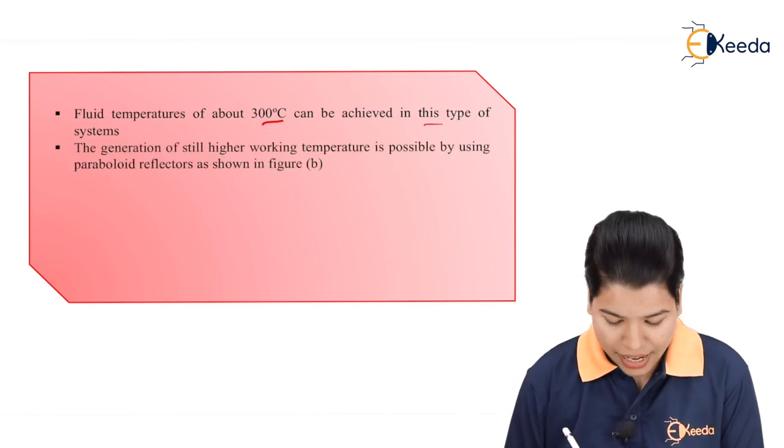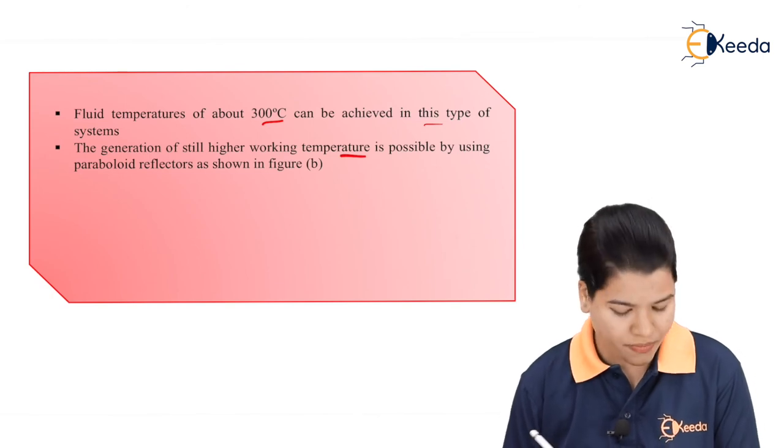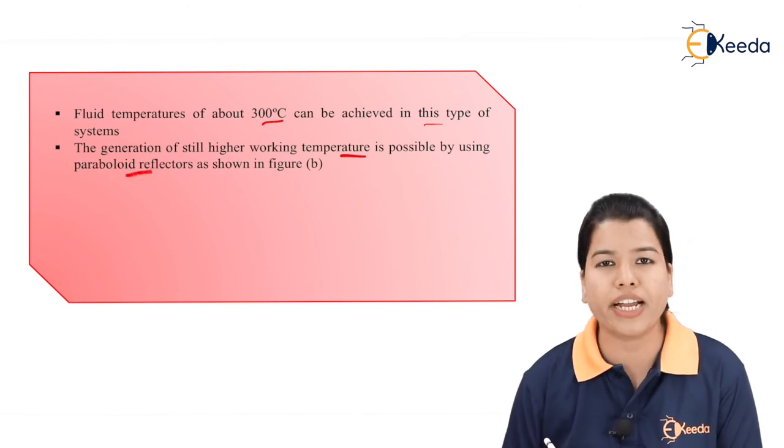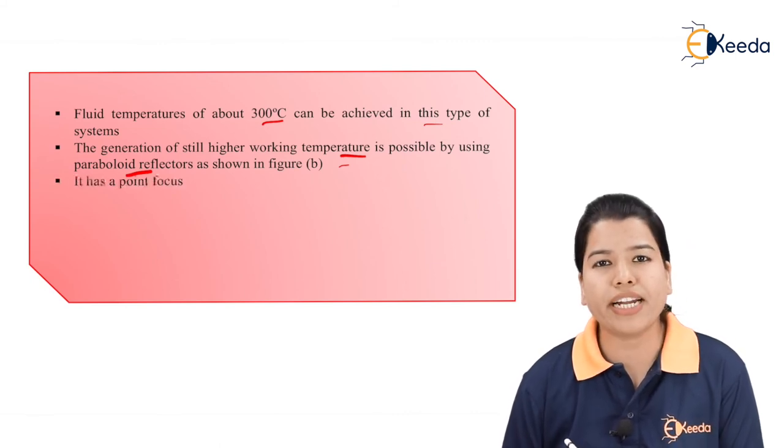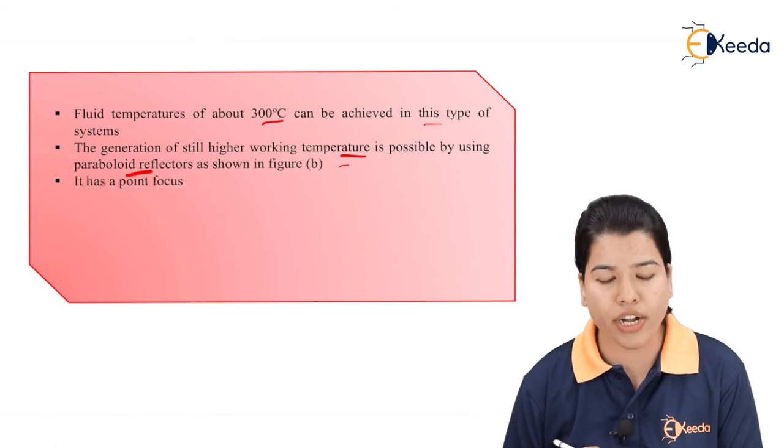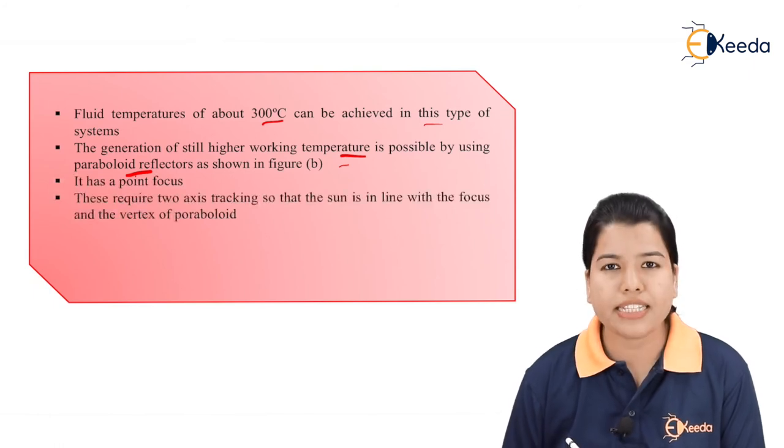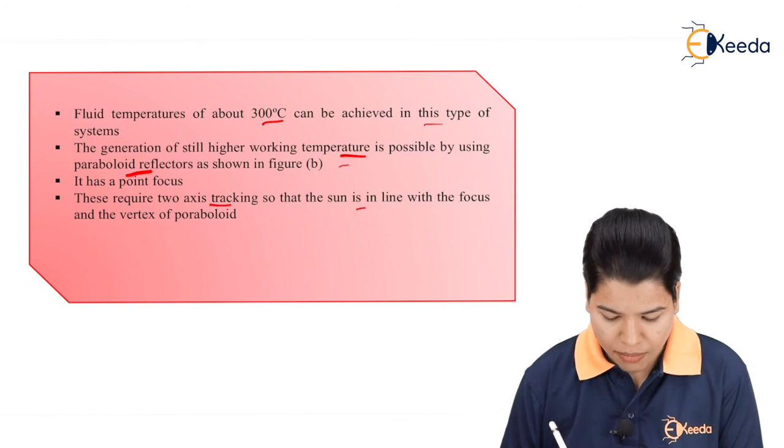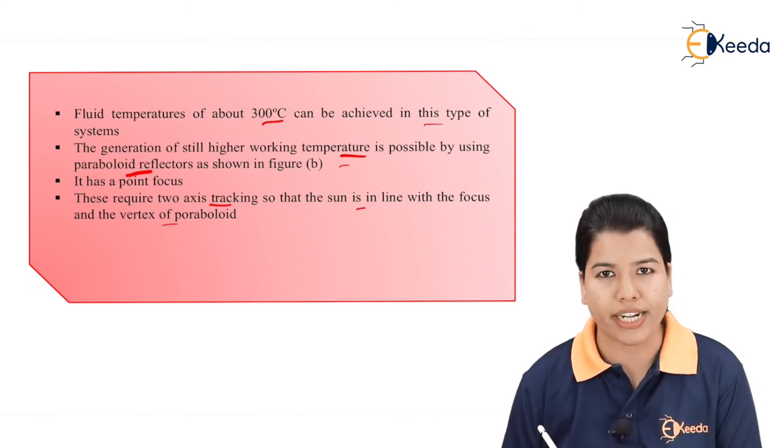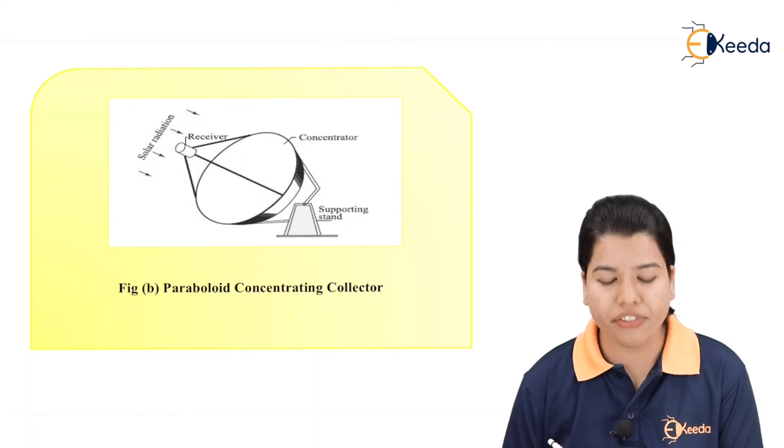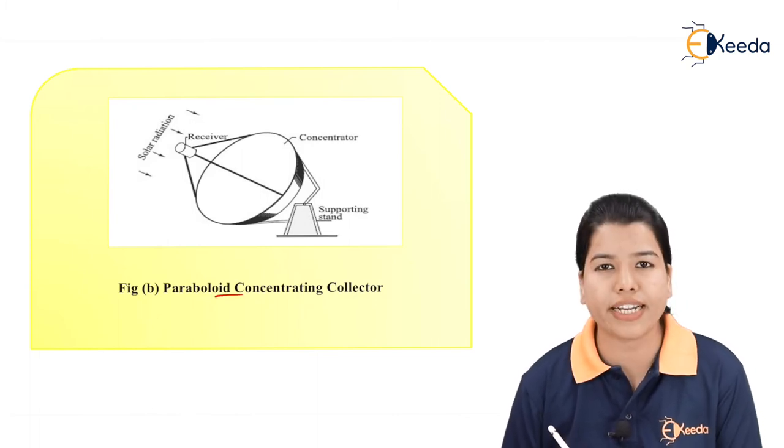The generation of still higher working temperature is possible by using the parabola reflectors which are shown in figure B. This type of reflector basically has one focus point. These require two axis tracking so that sun is in line with the focus and the vertex of the paraboloid. Here we can see the figure of paraboloid concentrating collector.